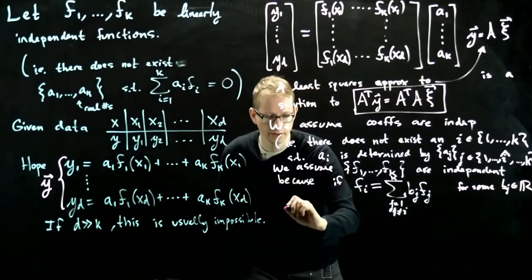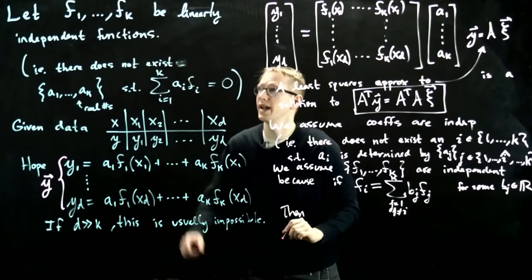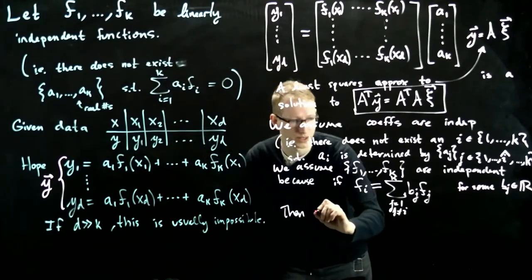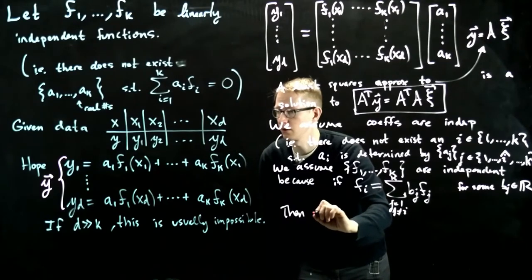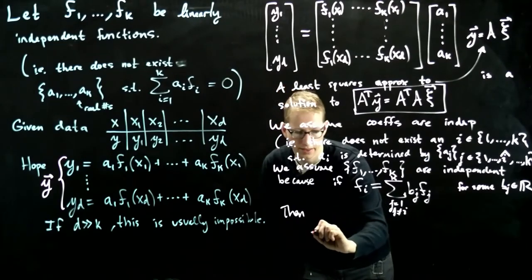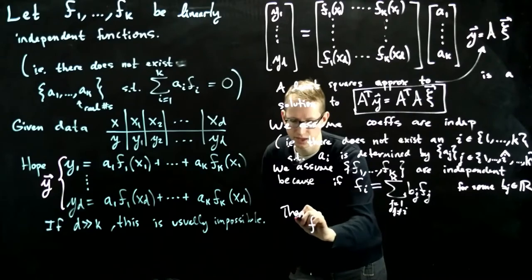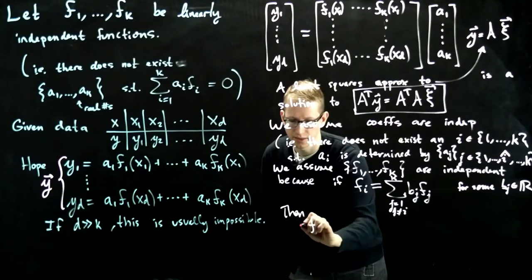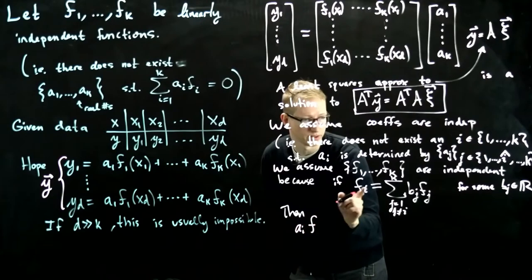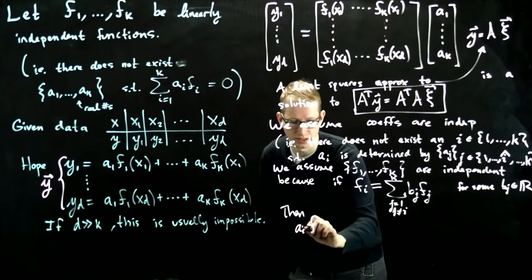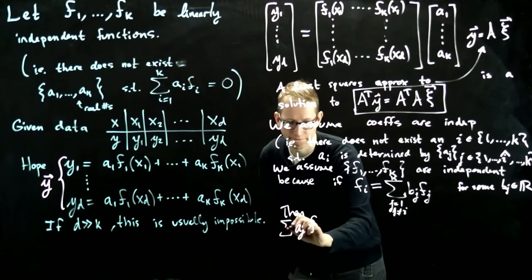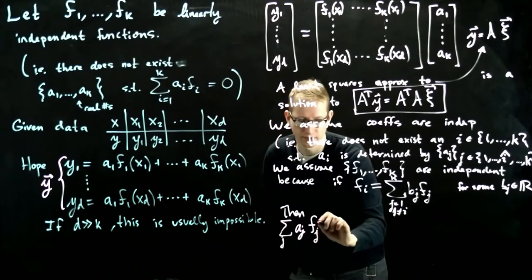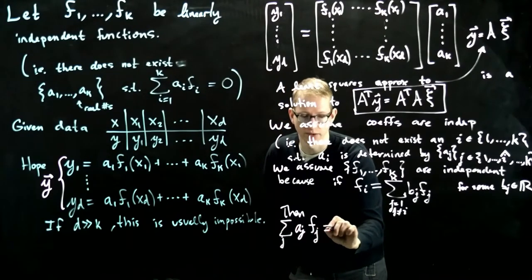Then what happens to these expressions? So then if we take f and we take its linear combinations, so let's say sum of aj*fj, and this breaks up into two parts now, right?